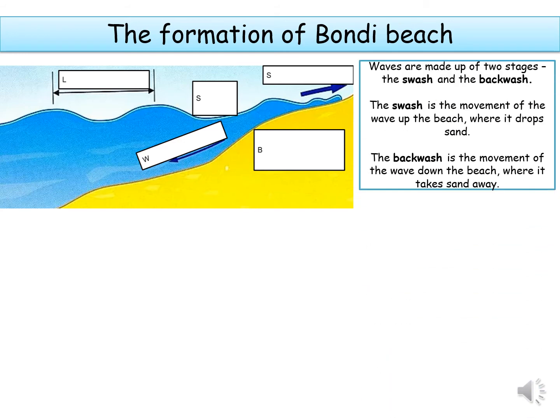Waves are made up of two different stages: the swash and the backwash. The swash is the movement of the wave up the beach, and when it moves up the beach, if the swash is nice and strong, it will drop lots and lots of sand. The backwash is the movement of the wave down the beach, and if the backwash is really strong, that will take sand away, making the beach disappear. You can't have a strong swash and a strong backwash in the same wave — you have one or the other.